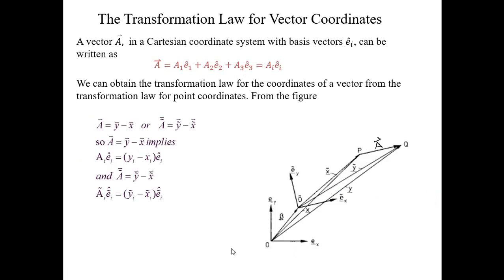Next is the transformation law for vector coordinates, or vector components — how to transform vector components from one coordinate system to another. A vector A in a Cartesian coordinate system with basis vectors EI-hat can be written as a linear combination of basis vectors, with components A1 to A3. In index notation we write this as AI EI.